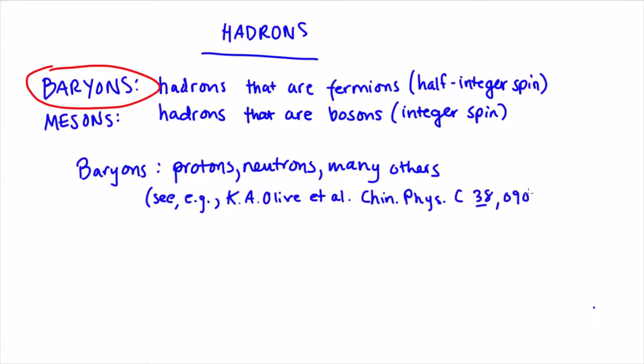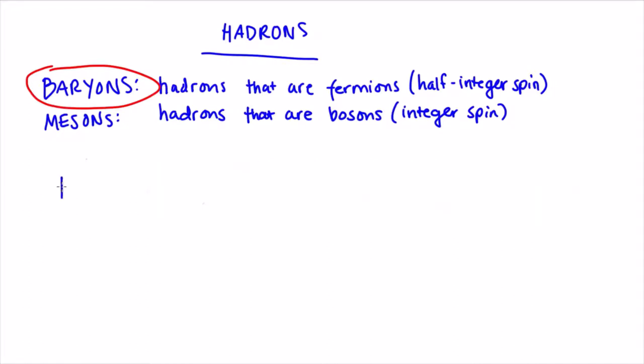Following on what we learned about leptons, we might expect to find some kind of baryon number conservation law. How might we test this? We could look for reactions that might violate this conservation law. For instance, we could use free neutrons as our test case.